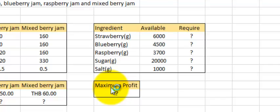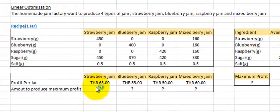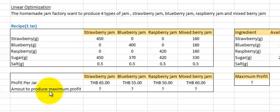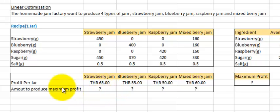This problem wants us to find the maximum profit. We can find the maximum profit by finding the amount of jars of each type of jam to produce — strawberry jam, blueberry jam, raspberry jam, and mixed berry jam — and then multiply the number of each type by the profit per jar.